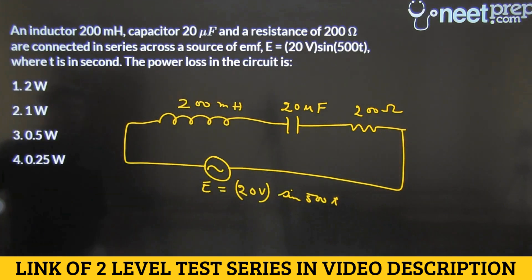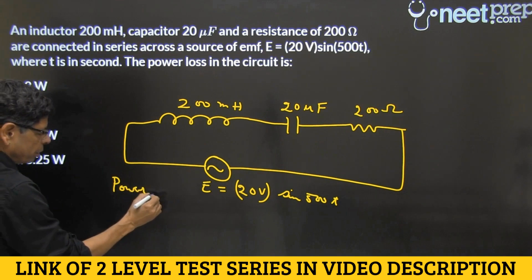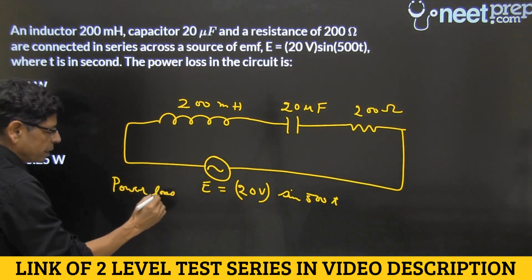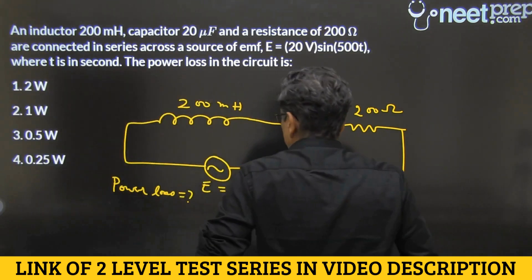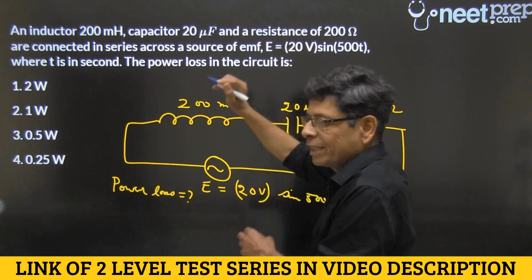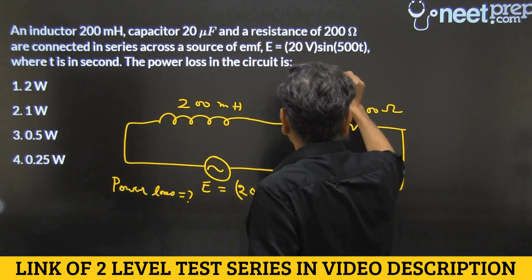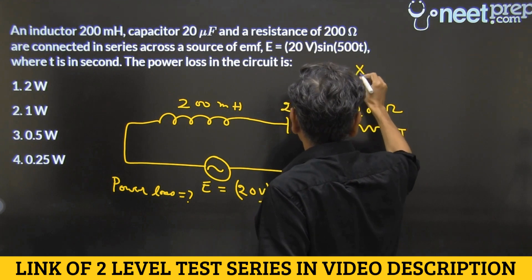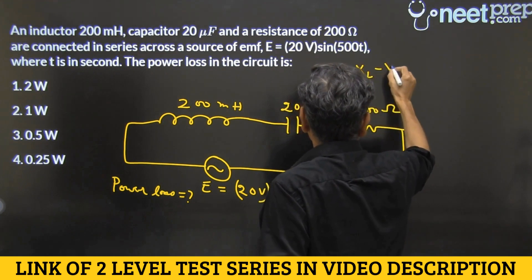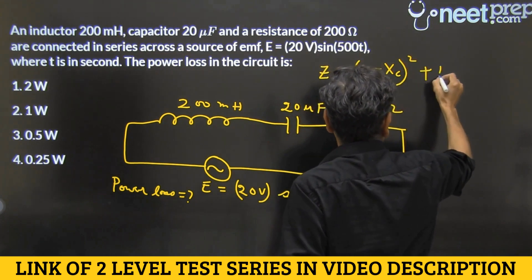And the question is power loss in the circuit, power loss, that is what we want, that is the rate at which energy is being lost. Okay, so let's compute Z, Z which is known as impedance. Now, the impedance, as you know, is given by XL minus XC whole square plus R square under root.